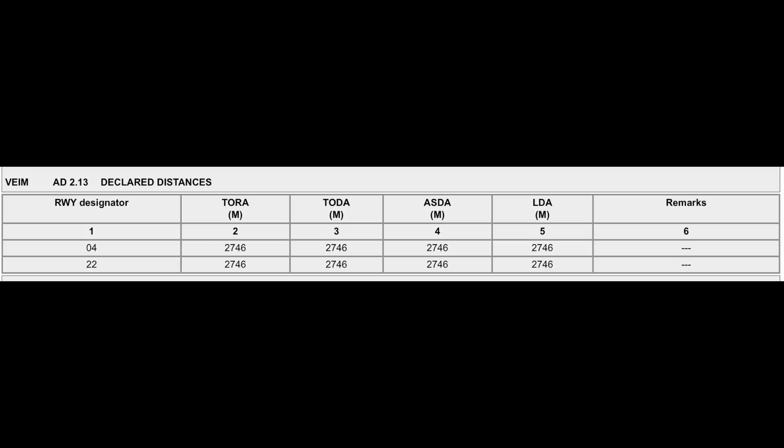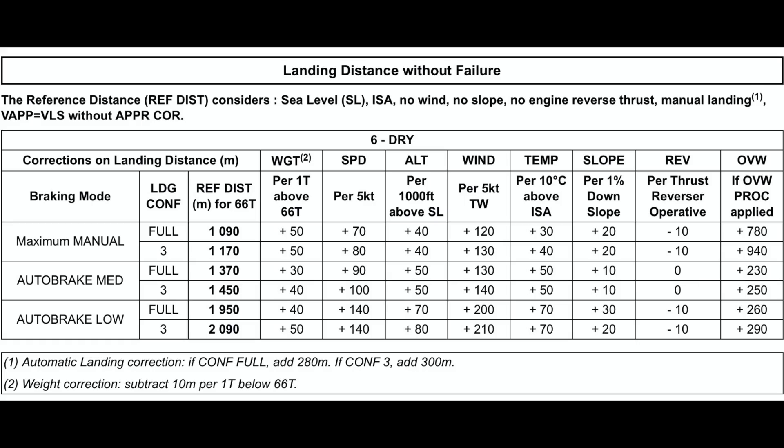The data you're seeing on screen has been derived from the AIP. First, let's talk about Imphal. The landing distance available at Imphal as declared by the Airport Authority of India is 2,746 meters — so 2.746 kilometers of runway is available. We're going to be talking about runway 04 at Imphal, because that's the runway which has ILS and is mostly used for landings.